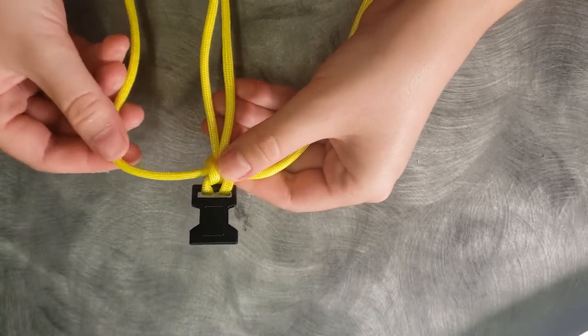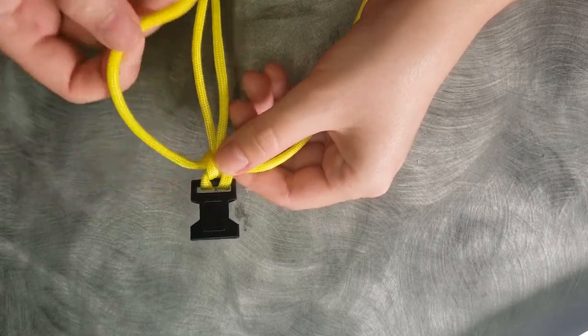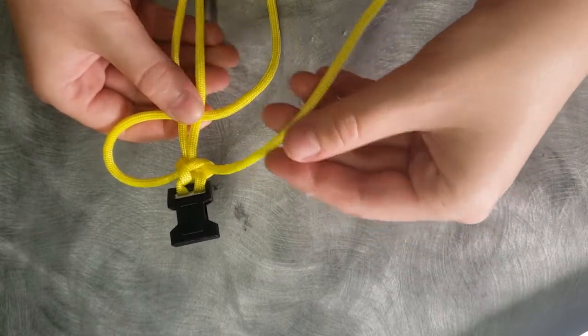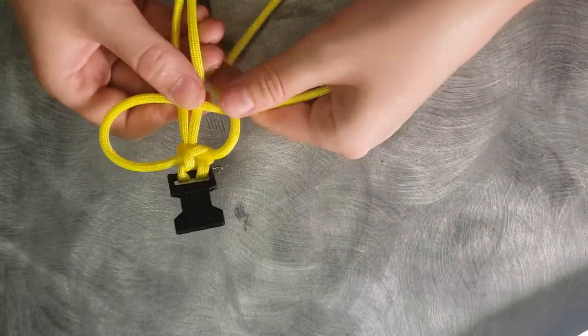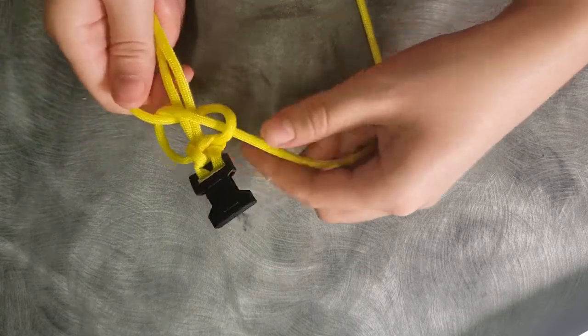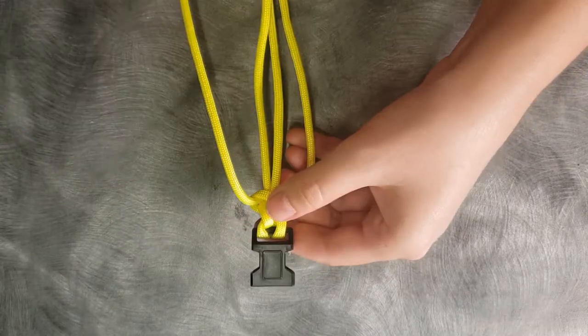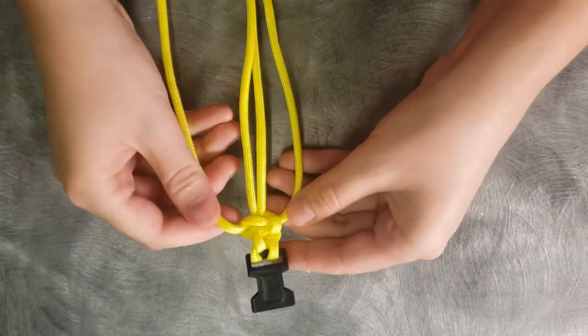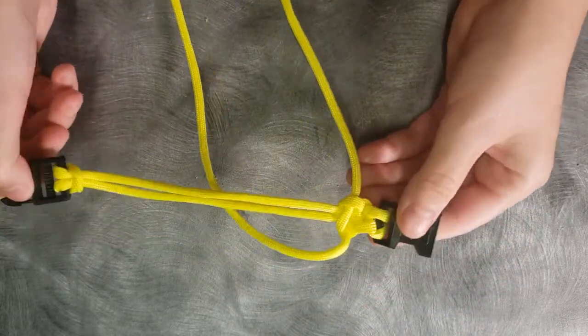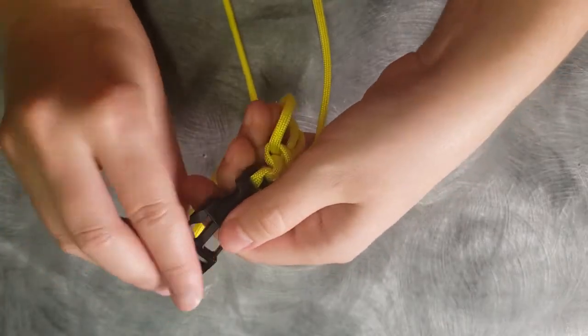Now we tighten with this side, so this is going to be the loop. Loop over the bracelet, other strand, over the one, under, and through the loop. Now we tighten. Now is a good time to check that the length of your bracelet didn't change while you were making the first two loops. So let's try that out.